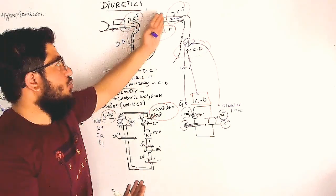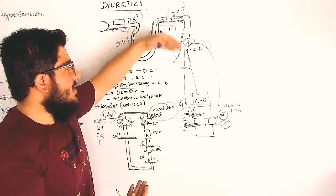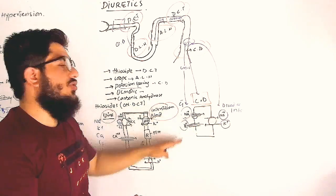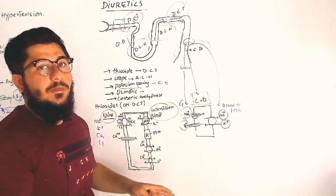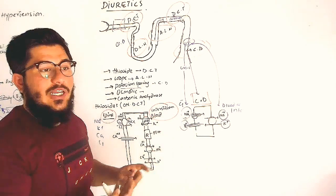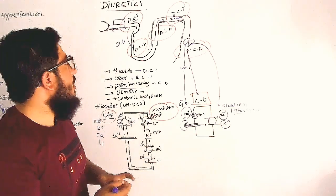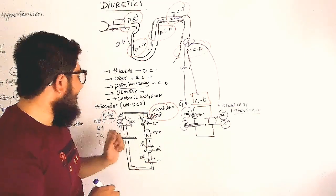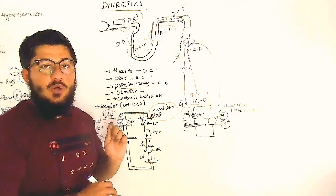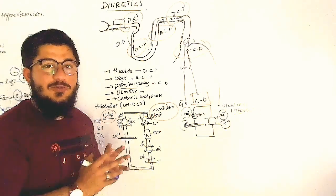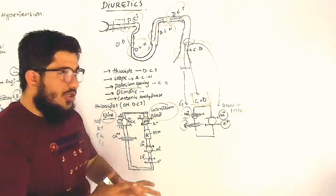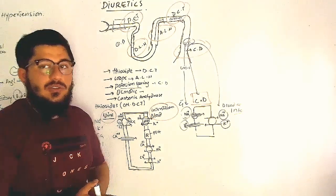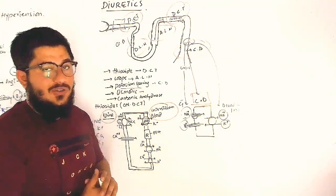This potassium loss leads to hypokalemia. This is all about diuretics — the very first one is thiazide, whose mode of action is specifically at the distal convoluted tubule.